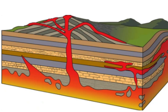Bathleths can be found all around the world, and many are associated with mountain ranges or other areas of intense tectonic activity. Some of the most well-known bathleths include the Sierra Nevada Bathleth in California, the Coast Mountains Bathleth in British Columbia, and the Peninsular Ranges Bathleth in Mexico.